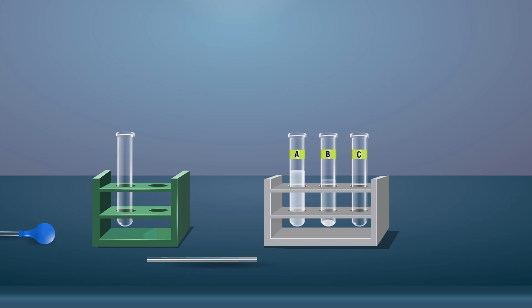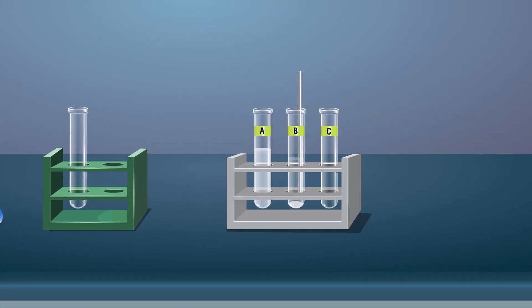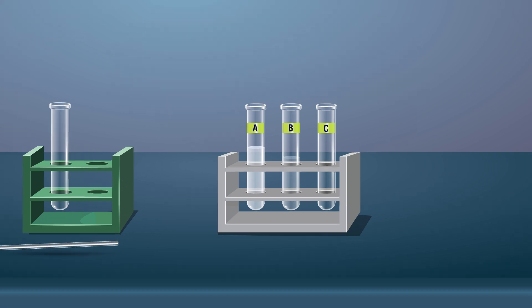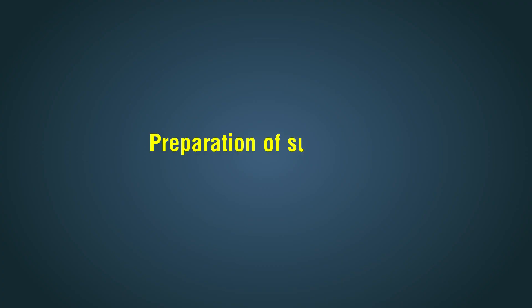Stir the solution till it becomes clear. Label this boiling tube as tube B.